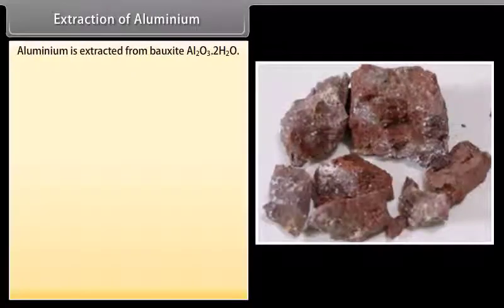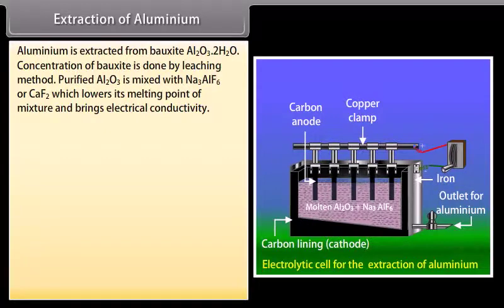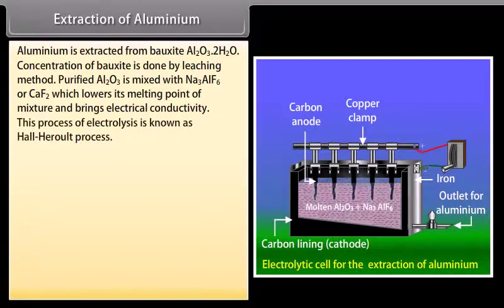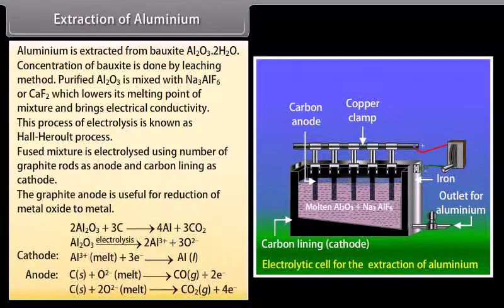Extraction of aluminium. Aluminium is extracted from bauxite Al2O3·2H2O. Concentration of bauxite is done by leaching method. Purified Al2O3 is mixed with Na3AlF6 or CaF2 which lowers its melting point of mixture and brings electrical conductivity. This process of electrolysis is known as Hall-Heroult process. Fused mixture is electrolyzed using number of graphite rods as anode and carbon lining as cathode. The graphite anode is useful for reduction of metal oxide to metal.